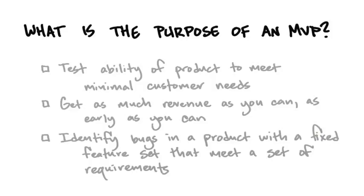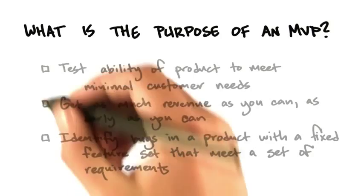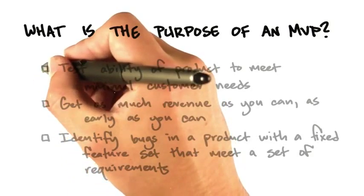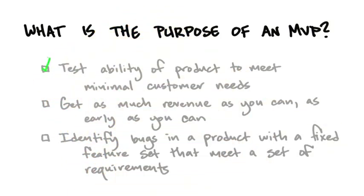So the question is, what's the purpose of a minimum viable product? It turns out that the answer is pretty specific. You want to test the ability of some portion of your product to meet minimum customer needs, and that might change over time. The MVP slowly grows as your confidence in who the customer archetype is.